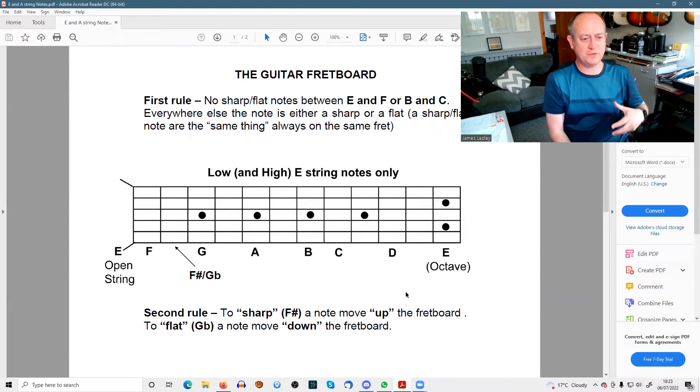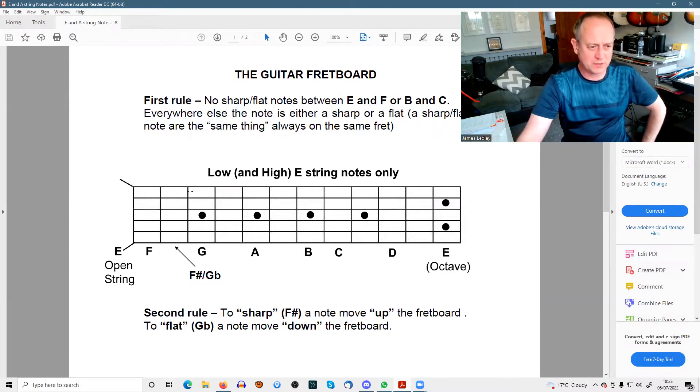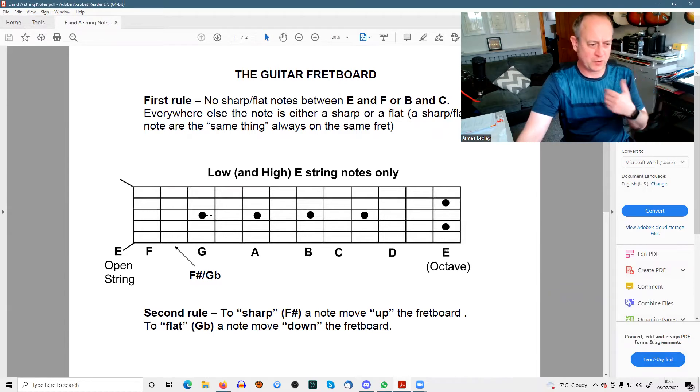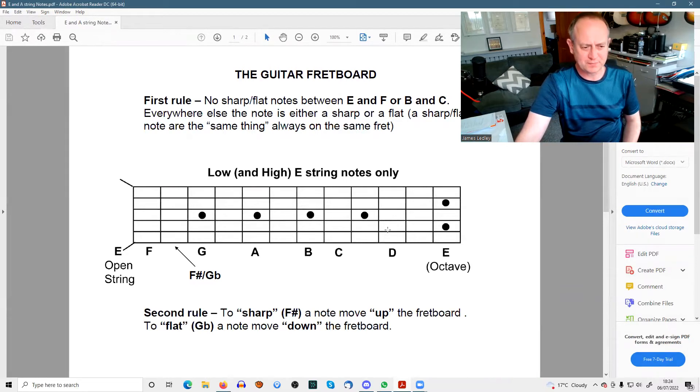Now if you're coming from a lead guitar point of view, I would look at the thinner strings being more of a priority, but from a chord playing rhythm point of view, you really only need the E string and the A string and you can be playing thousands of chords, bar chords, some open chord shapes, but mostly the bar chords and power chords.